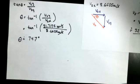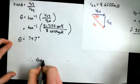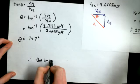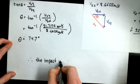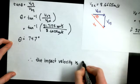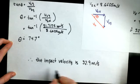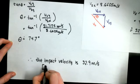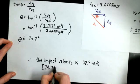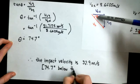So our final answer will be that the impact velocity is 32.9 meters per second at an angle of 74.7 degrees below the horizontal. Because right here will be the horizontal and this is the angle.